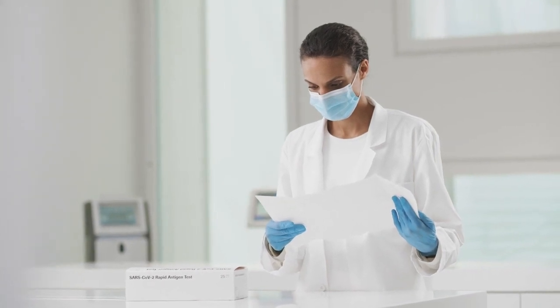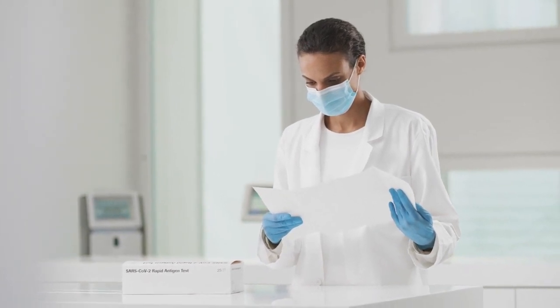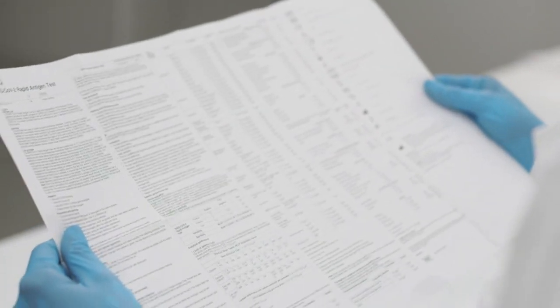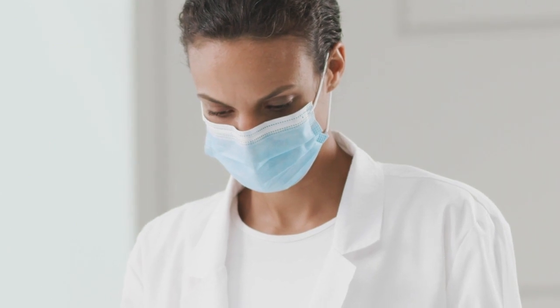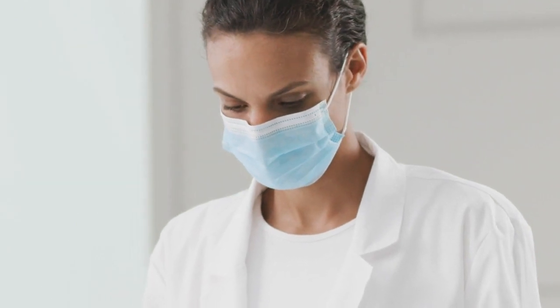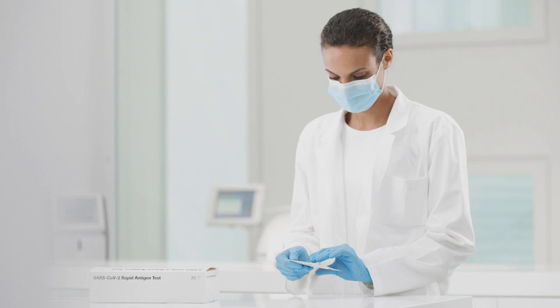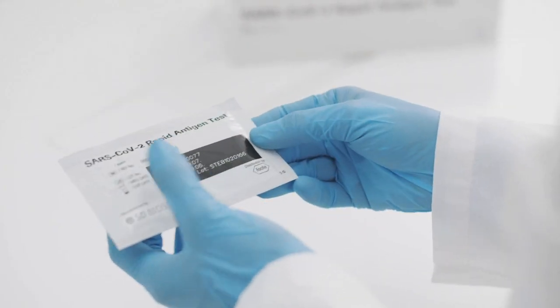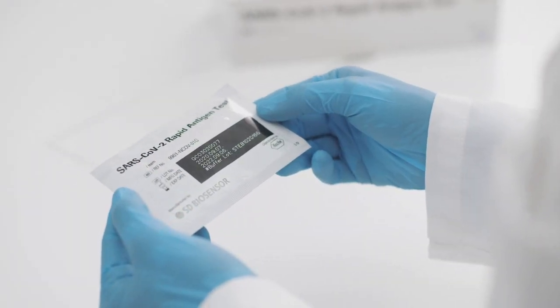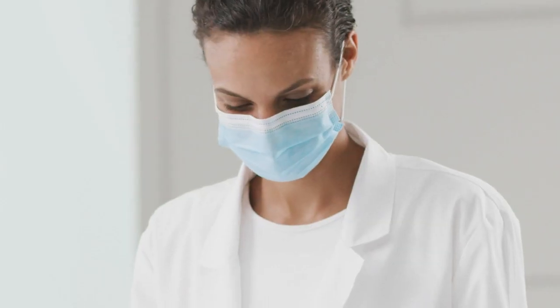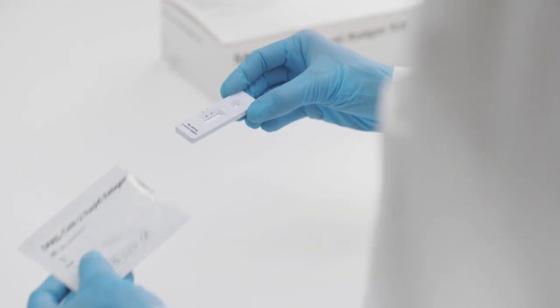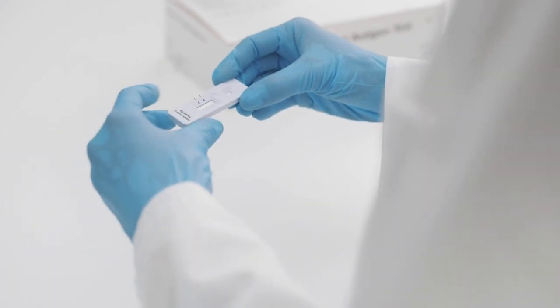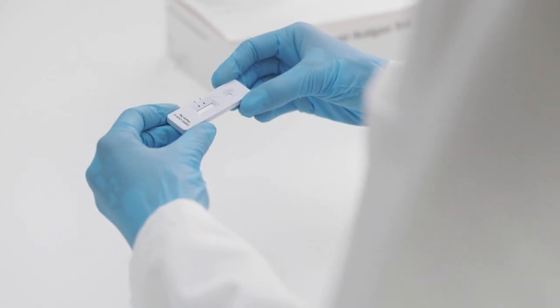There are four steps to performing the test. Begin by carefully reading the instruction for use. Use appropriate personal protective equipment and handle all samples as if they contain infectious agents. Before opening the test, check the expiry date on the back of the foil pouch. Do not use the test if the expiry date has passed. Now open the foil pouch and remove the test device and the desiccant package. Take a moment to ensure that the test device is undamaged and that the desiccant status indicator shows valid.